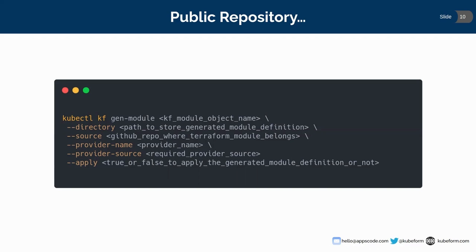This is for the public repository. The command is `qctl kf gen module` — this is the command for generating QFIRM module definitions. Then you have to give the QFIRM module definition object name. You can pass a couple of flags, such as `directory`, which is the path where you want to store the QFIRM module definition YAML that is generated by QFIRM CLI, and also `secret` if it is a private repository. Then you have to give the `source`, which is used to refer to your QFIRM module configurations from your public or private git repositories.